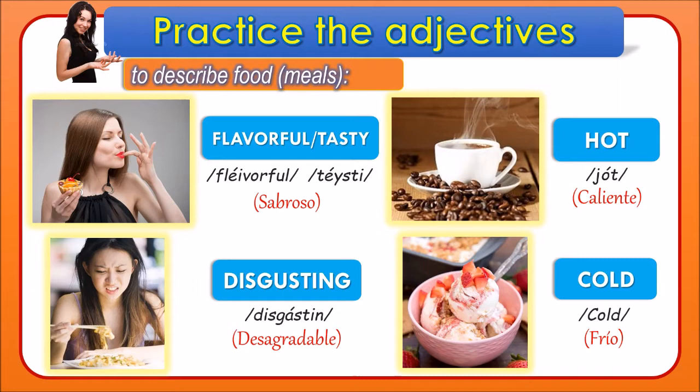We start with the first picture: flavorful, or tasty — they both mean sabroso, delicious. Then we have hot — for example, the coffee is hot. Disgusting is the following adjective — when something is not actually tasty, when something is not so pleasant. And then we have cold. Good students, now let's practice with some other adjectives.